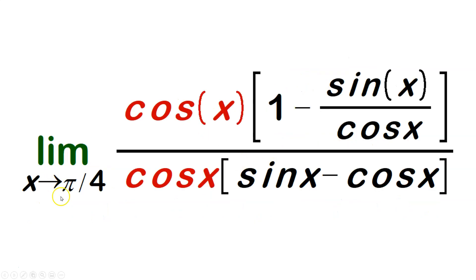Then I'm going to multiply by cosine x over cosine x. So it's the limit as x approaches π/4 of cosine x multiplying 1 minus sine x over cosine, and in the bottom another cosine multiplying sine x minus cosine x. This is allowed because cosine over cosine is 1.